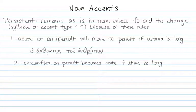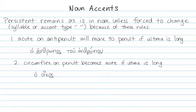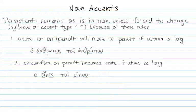Next rule: if there is a circumflex on the penult, it becomes an acute if the ultima is long. For example, ho oikos has a circumflex on the penult, and the ultima happens to be short. When we change to the genitive, tu oiku, the ultima is now long. The rule says the circumflex on the penult must become an acute. So we get ho oikos, but tu oiku. Those are the rules in short.